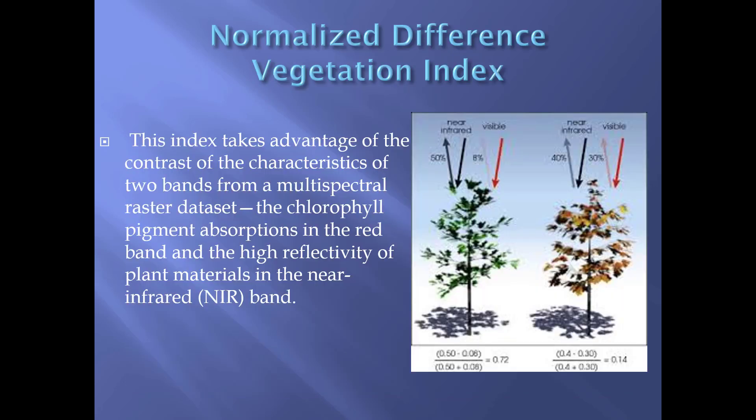NDVI stands for Normalized Difference Vegetation Index. It takes advantage of the spectral properties of the red portion from the visible electromagnetic spectrum and near infrared from the electromagnetic spectrum, and how plants interact with those two primary wavelengths. There is a contrast of characteristics of the two bands from a multispectral raster dataset.